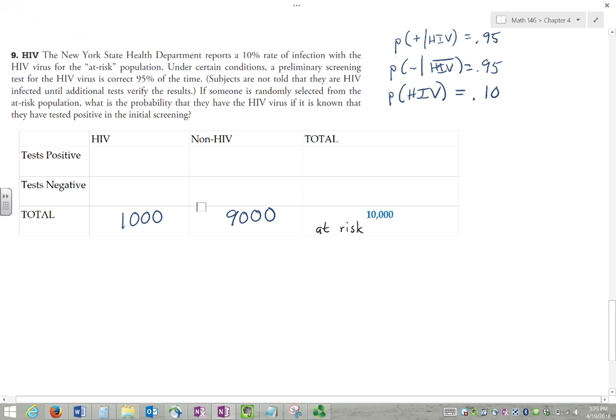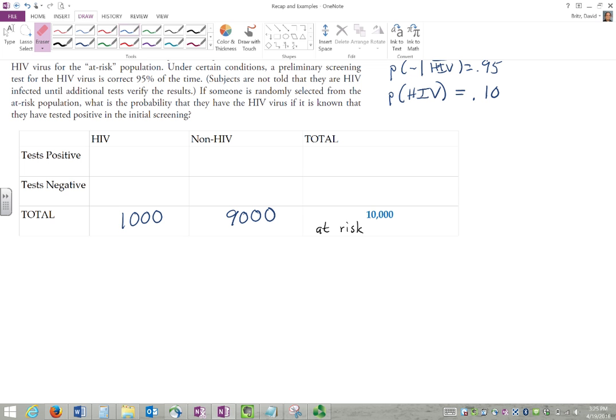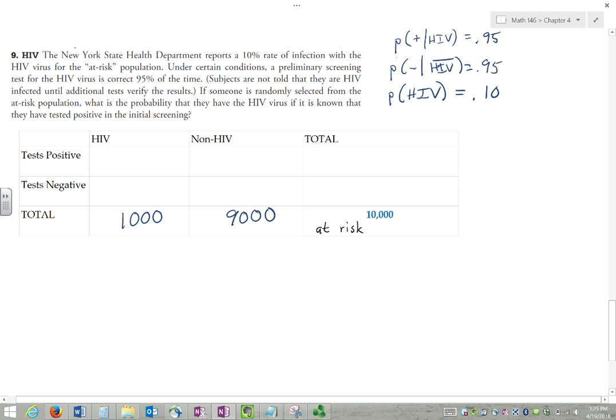So what's next? Well, we know that of those people, of the 1,000 with HIV, 95% will test positive, and 5% will test negative. So 5% of 1,000 is 50, and if we subtract, these have to add up to 1,000, there'll be 950 who test positive out of the 1,000 who actually have it.